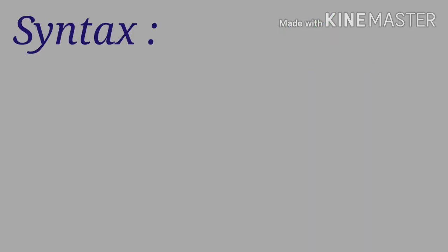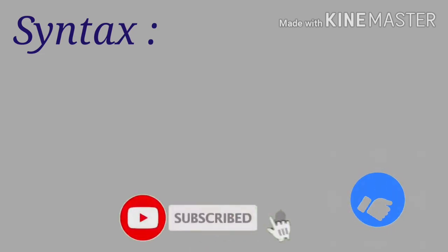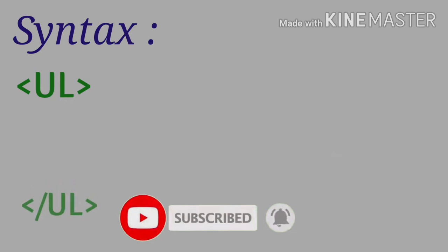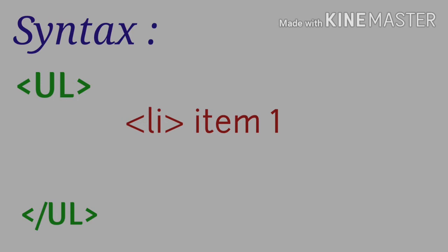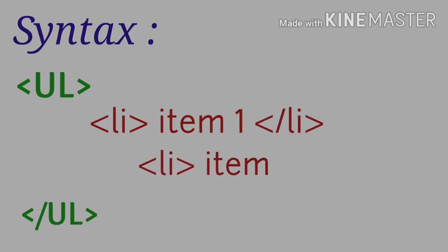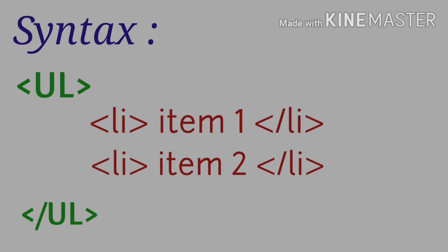Now let's see the syntax first. Between the body tag you have to mention the type of list, either ul or ol. Today we are going to learn about ul. After that, between the ul and slash ul, you have to write the item names. Always remember that you have to write each and every item name between the li and slash li tag. That means if you have two items, you write li item 1 slash li, li item 2 slash li, and then close the ul tag. To customize the symbol you can use the type attribute.